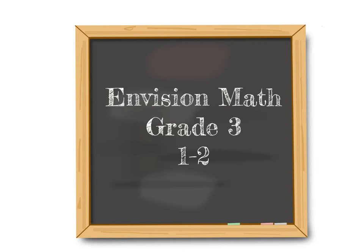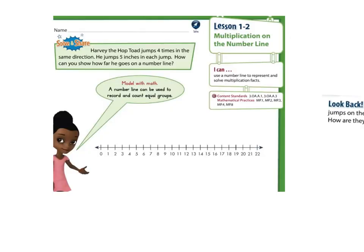Envision Math, Grade 3, Topic 1, Lesson 2. Harvey the Hop Toad jumps four times in the same direction. He jumps five inches in each jump. How can you show how far he goes on a number line?